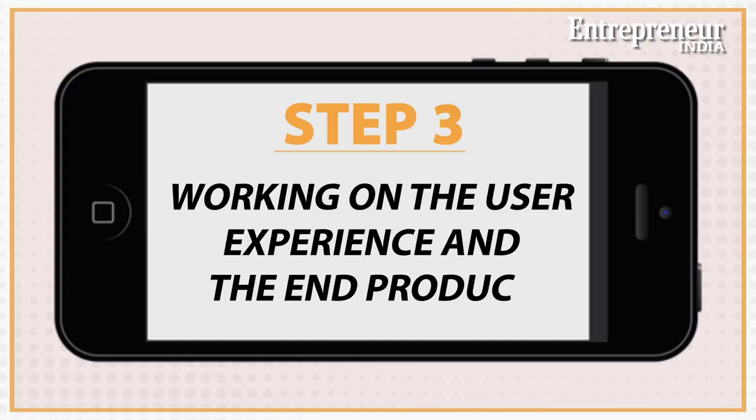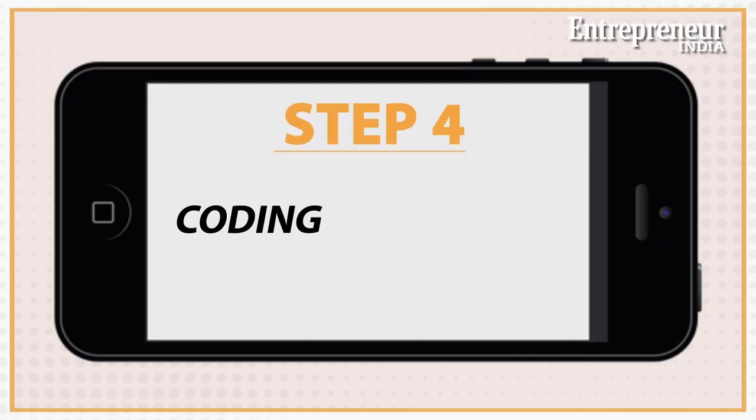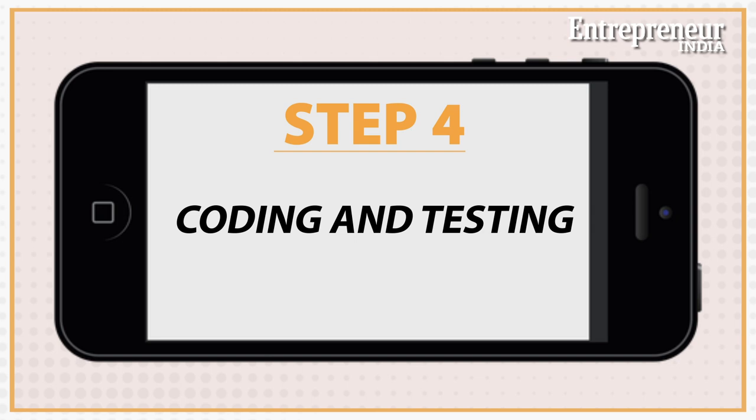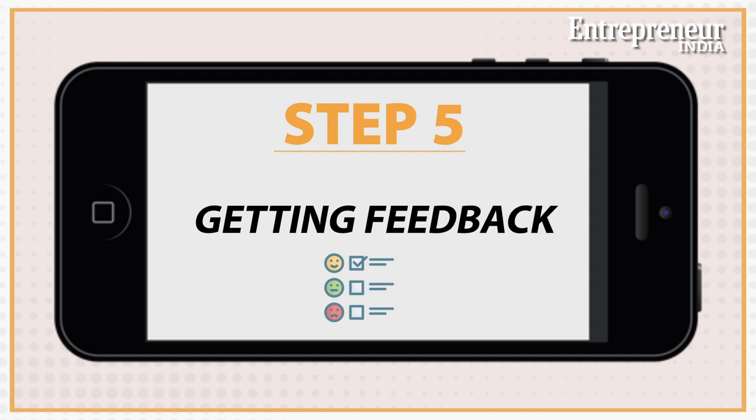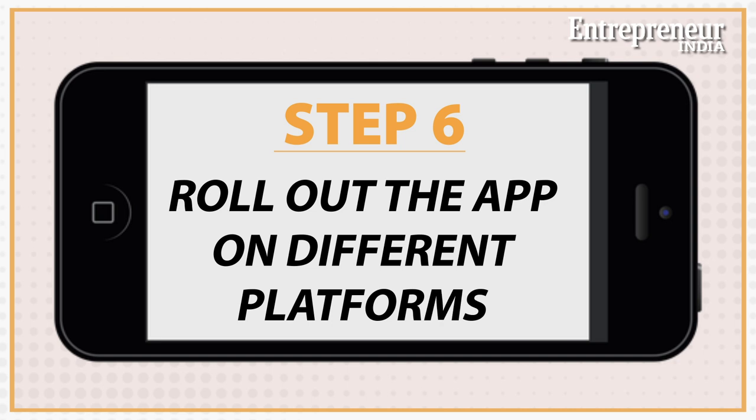Design how each of your app's functionalities will work and how the end user will interact. Coding is the obvious next step. Test your app as a user and also get a select few to use it. Get feedback and improve until the end product works fine — this step is necessary to get rid of bugs. Now put it out there on whichever platform you built it for. The process to get listed on Google Play Store is faster and easier than on the Apple App Store.